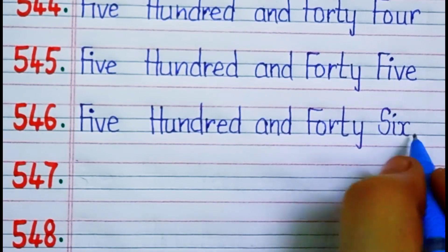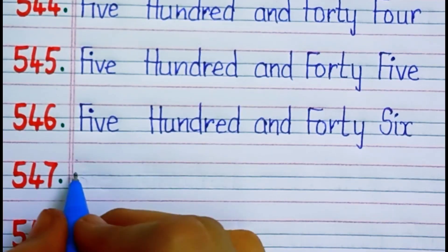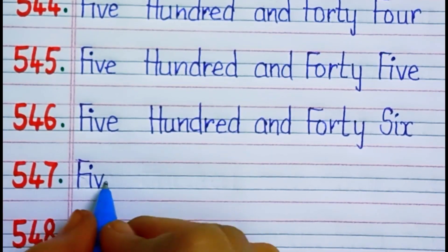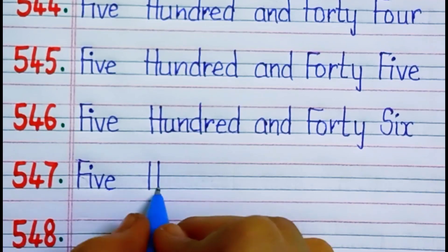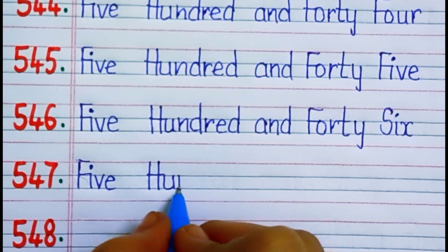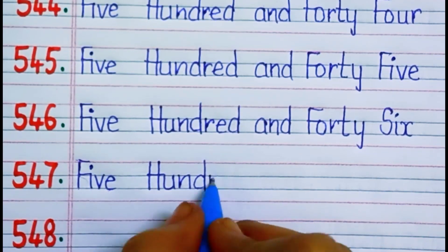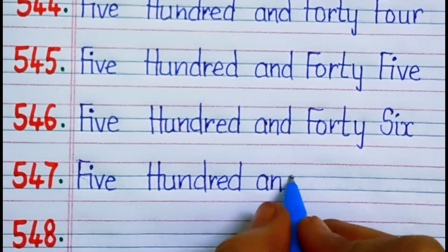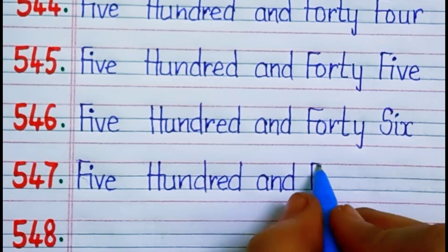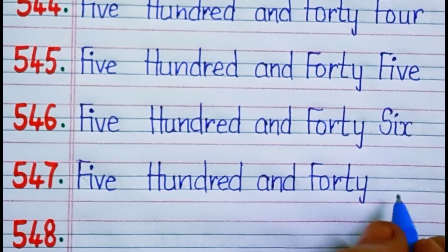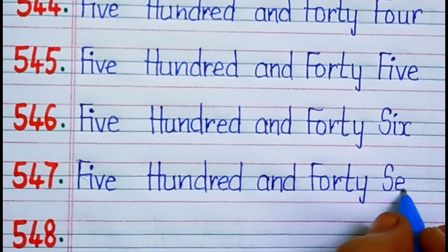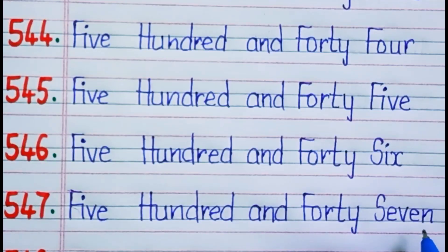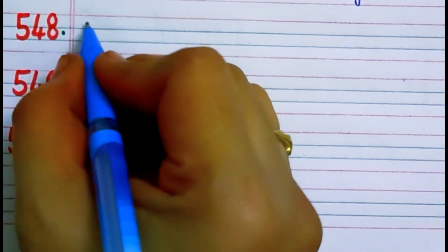Five four seven — five hundred and forty seven. F-O-R-T-Y, forty. S-E-V-E-N, seven. Forty seven.